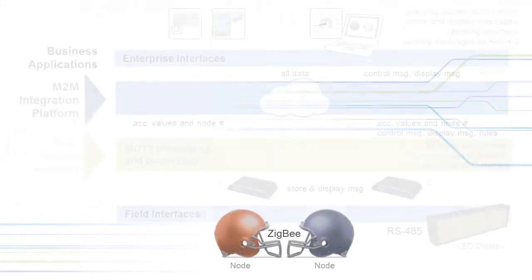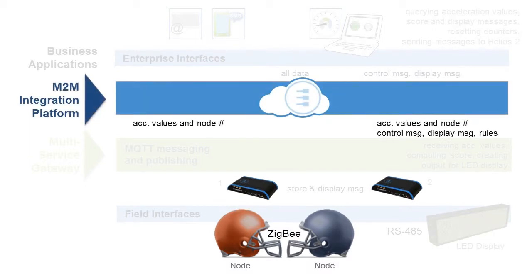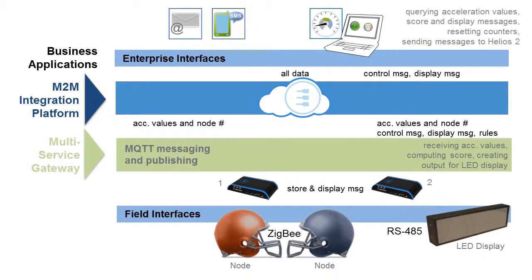To do this, we took some wireless Zigbee accelerometers and pulled the data from them into one of our multi-service gateways. This has an application which checks the data against some thresholds and publishes the data up to the integration platform if a significant impact occurs.